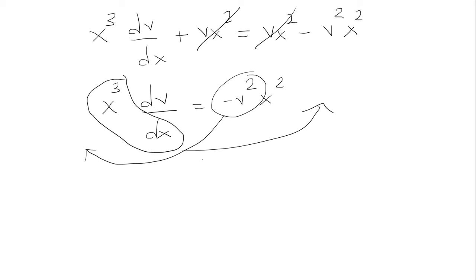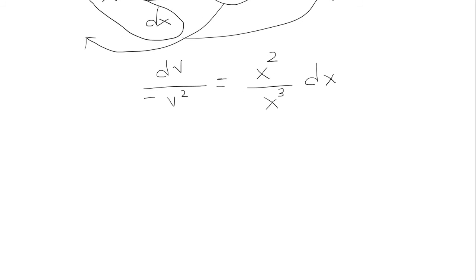Okay, so the negative v squared we're going to be dividing, so that's going to go on the bottom. On the right I have x squared. The x cubed is going to be on the bottom, and the dx is going to be at the top. We're going to simplify, so the x squared over x cubed is 1 over x. And now we can integrate.